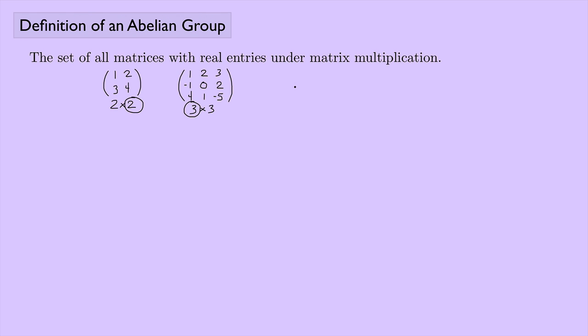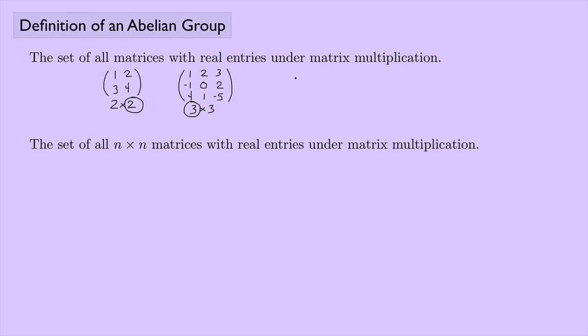The matrices need to be compatible for matrix multiplication. So maybe we consider the set of all n×n matrices with real entries under matrix multiplication. But we still have another problem. Consider the 2×2 zero matrix — all entries are 0. This is n×n with real entries. What's the problem? To be a group we need inverses.